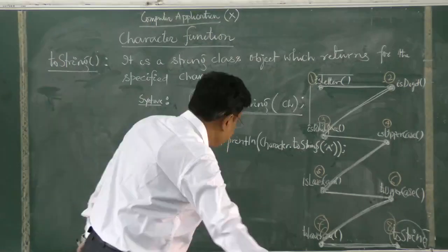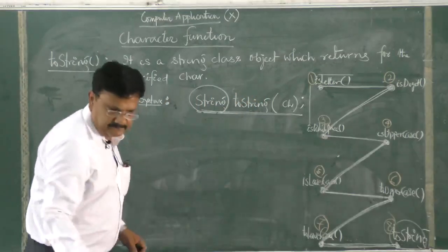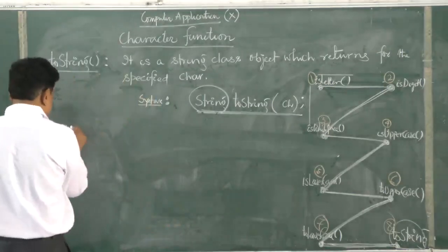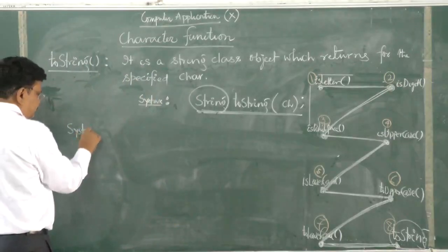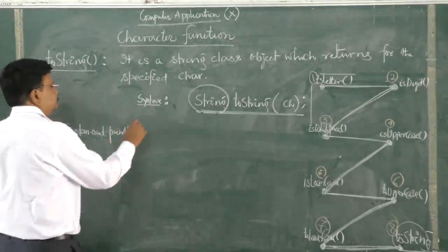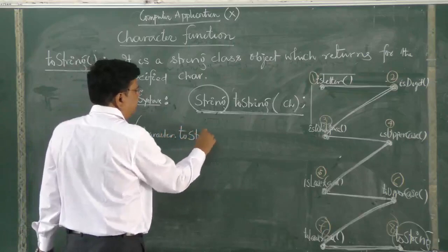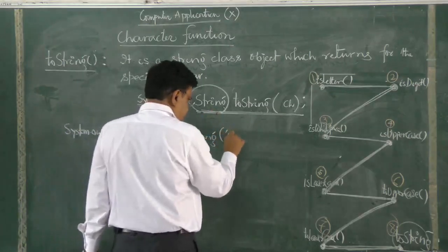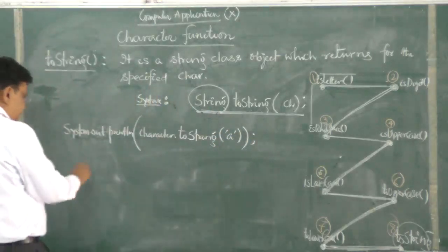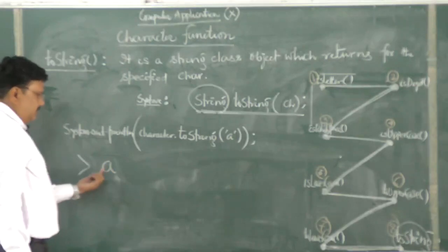Similarly, we can also write like this. For example, System.out.println, Character.toString — suppose I write small 'a' inside the bracket. What will be the output? Small a. The character will be converted to a string, and the output will be a.